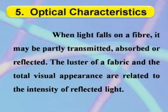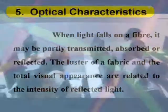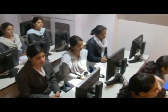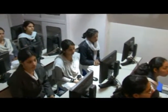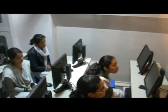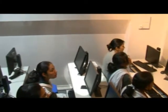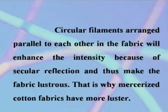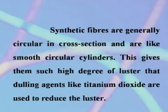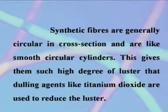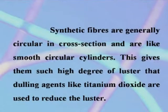Optical Characteristics. When light falls on a fiber, it may be partly transmitted, absorbed, or reflected. The luster of fabric and the total visual appearance are related to the intensity of reflected light. Circular filaments arranged parallel to each other in the fabric will enhance the intensity because of specular reflection and thus make the fabric lustrous. That is why mercerized cotton fabrics have more lustre. Synthetic fibers are generally circular in cross section and are like smooth circular cylinders. This gives them such a high degree of lustre that dulling agents like titanium dioxide are used to reduce lustre.